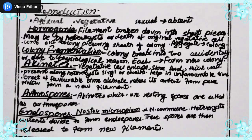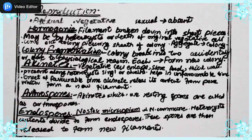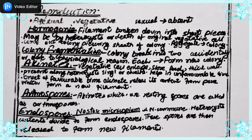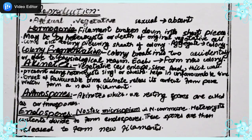The first method is hormogonia. In this type of reproduction, one of the vegetative cells gets enlarged, stores reserve material, and the vegetative cells get separated. The filament is broken down, either accidentally or by formation of a heterocyst. This separated or broken portion of the filament grows larger, and when aggregated, gives rise to new colony or new cells.